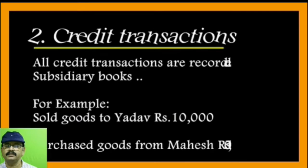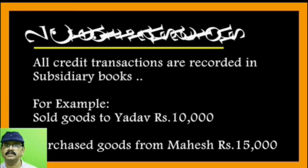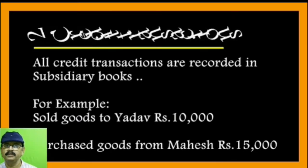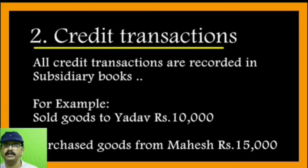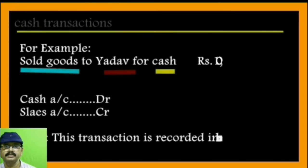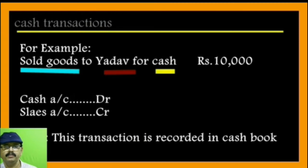The second one is credit transactions. All credit transactions are recorded in the subsidiary books. For example, sold goods to Yadau 10,000 and purchased goods from Mahesh 15,000 — these two are examples of credit transactions.